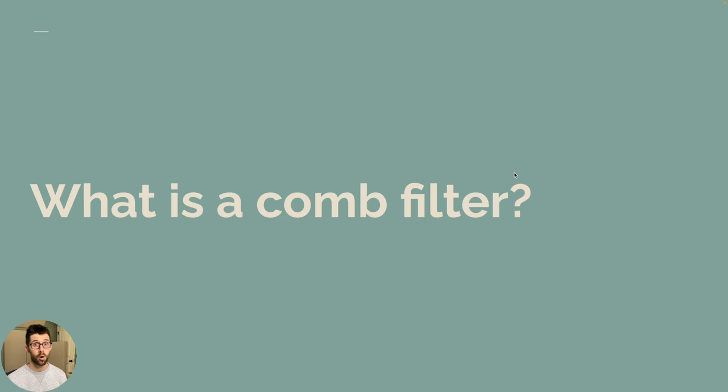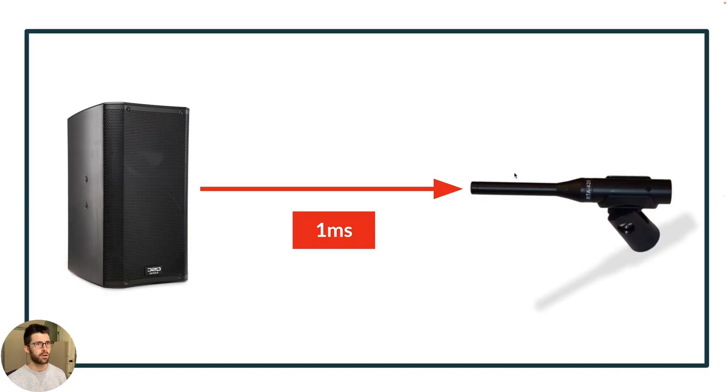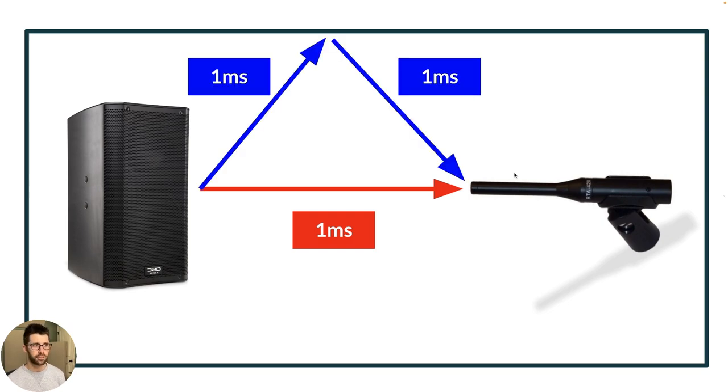So what is a comb filter? If we go back here to our speaker going to our measurement microphone, this is one millisecond of propagation time from that speaker to that microphone. Now the speaker's hitting a wall on the north side of it and then reflecting back down. Now that propagation path is doubled. So now it's one millisecond to get to the wall, then one millisecond to get back to the microphone. Both those signals are combining in space at the microphone. We have a one millisecond path combining with a two millisecond path.